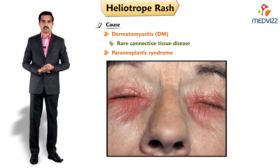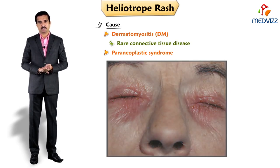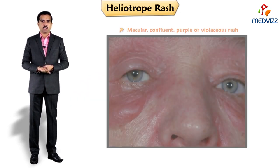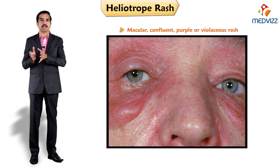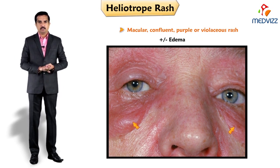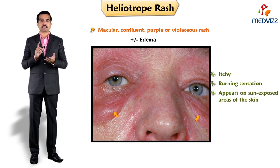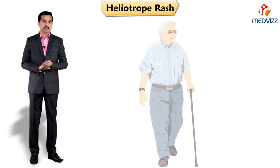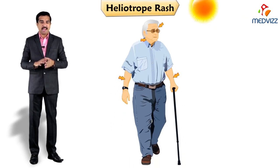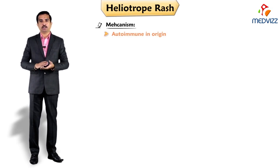People with this disease have a violet or bluish-purple rash that develops on the skin. They also experience muscle weakness, fever, and joint aches. It is commonly described as a macular, confluent, purple or violaceous rash over both eyelids and periorbital tissue. It can present with or without edema, and this rash may be itchy or may cause a burning sensation. It commonly appears on sun-exposed areas of the skin including the face, eyelids, and neck, and the mechanism is unknown but thought to be autoimmune in origin.